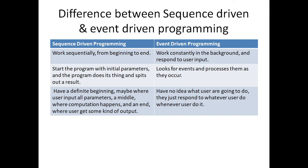The difference between sequence driven and event driven programming is that sequence driven programming works sequentially from beginning to end, whereas event driven programming works constantly in the background and responds to user input. Sequence driven programming starts the program with initial parameters, the program does its work, and outputs the result. Event driven programming looks for an event and processes them as they occur.